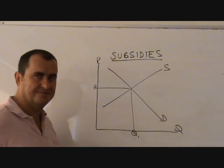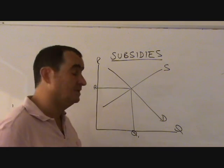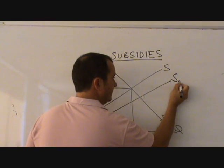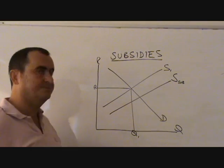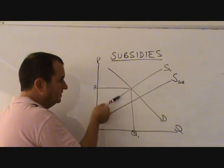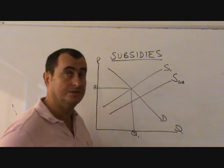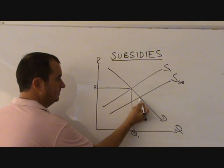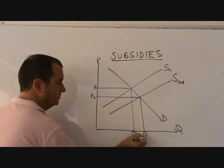The vertical shift of the supply curve is equal to the subsidy being given per unit. So let's look at this one. Here we are. S sub indicates from S1 that there's been a subsidy given. The vertical distance between these supply curves represents the subsidy being given per unit. Now, clearly we have a new equilibrium price here. There's our new equilibrium, P2, and a new quantity, Q2.